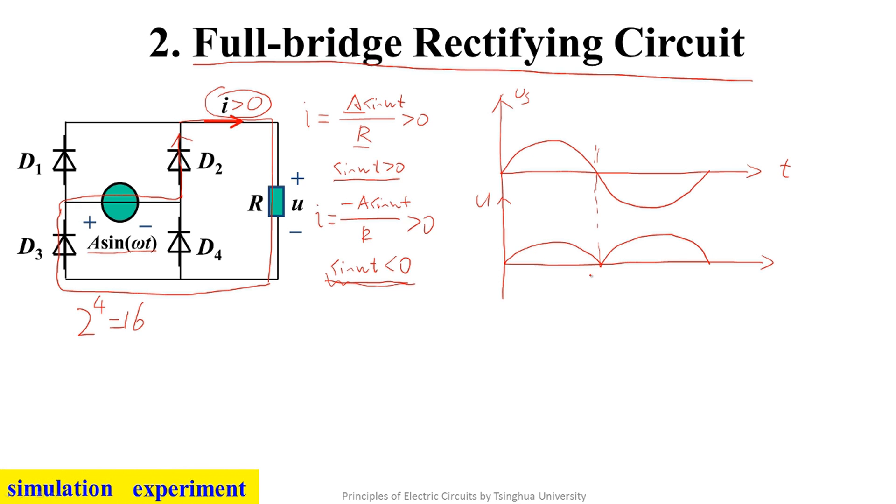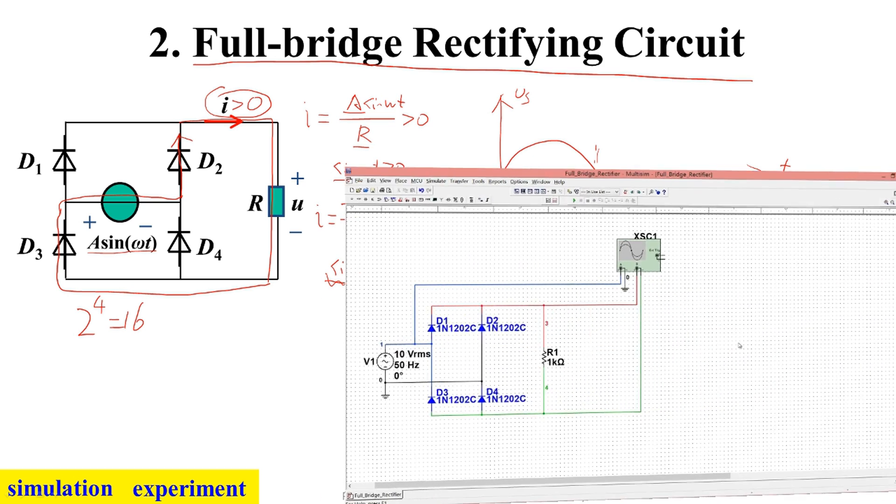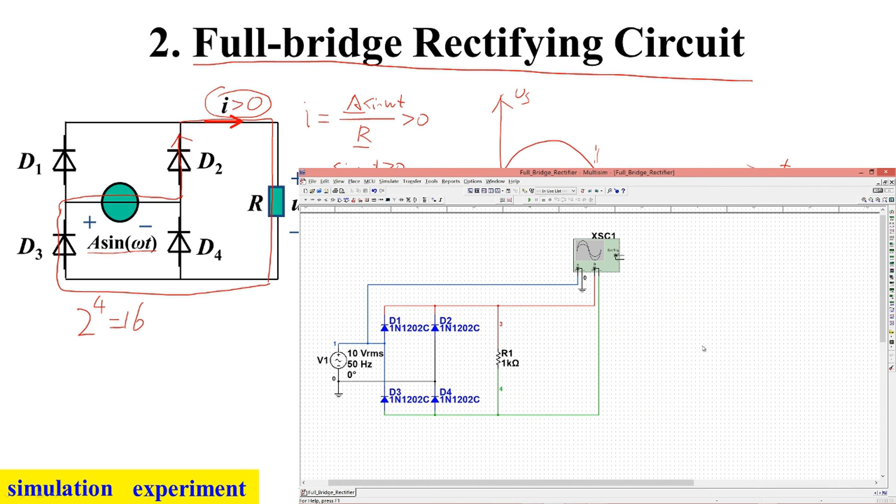Next, we use simulation and experiment to verify the previous analysis. By simulation, we verify the function of the full-bridge rectifier circuit. In the circuit, four diodes are in bridge connection. The input is a sinusoidal voltage source 10V RMS at 50Hz. The output is the resistor R1.